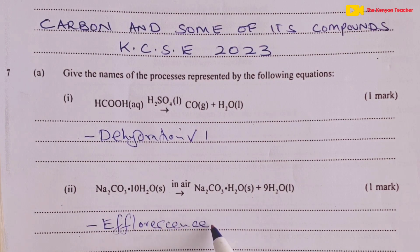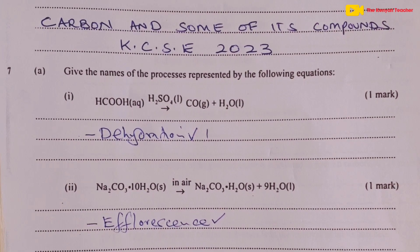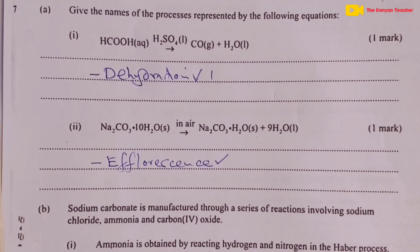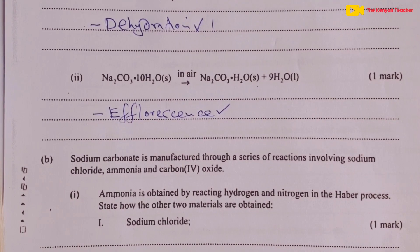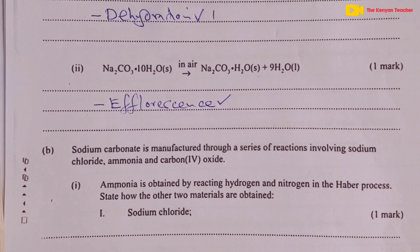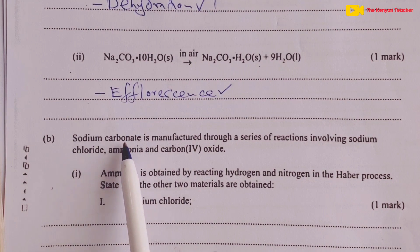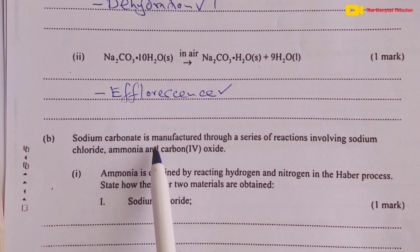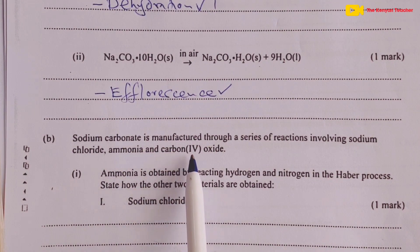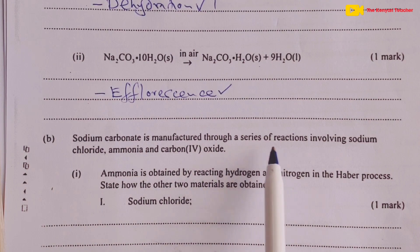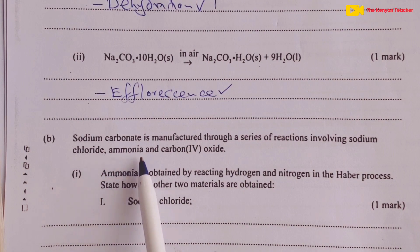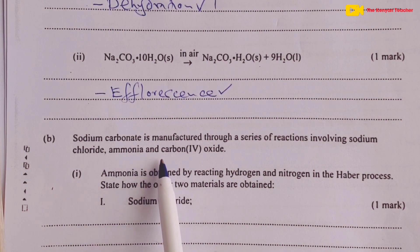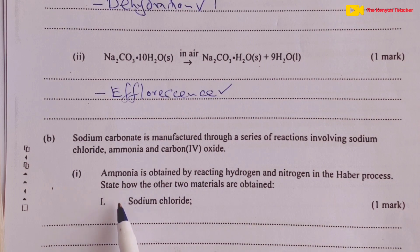This process is called efflorescence, for the next mark. Now for question 7, Part B: sodium carbonate is manufactured through a series of reactions involving sodium chloride, ammonia gas, and carbon dioxide. Roman 1.